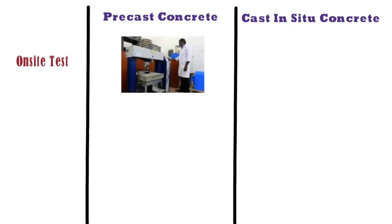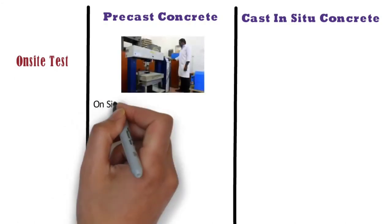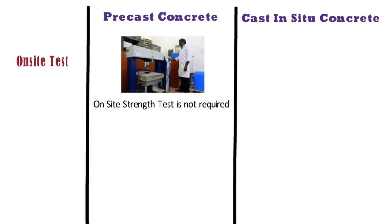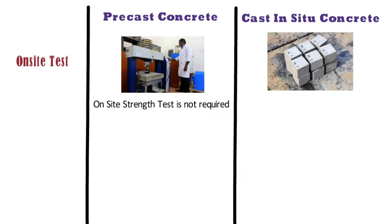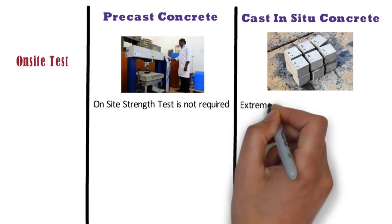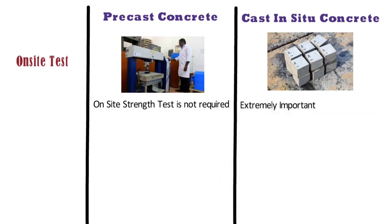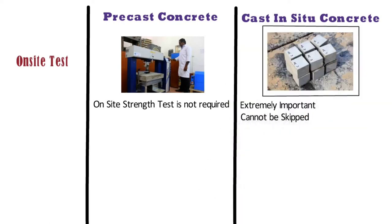In case of the precast concrete method, strength tests are carried out at the factory, hence on-site strength testing is not required. On the other hand, for cast in situ concrete, on-site strength tests are extremely important for ensuring that your building is safe, and this is a step that cannot be skipped.